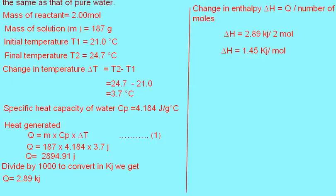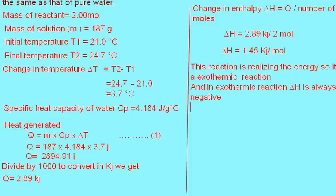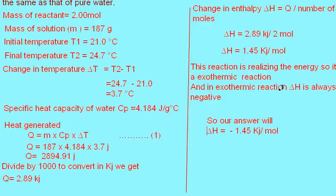As we know, in this reaction heat is releasing, which means it is an exothermic reaction. In an exothermic reaction, Delta H is always negative, so our answer is Delta H equals negative 1.45 kJ per mole. I hope you have understood this problem properly and can solve all similar problems.